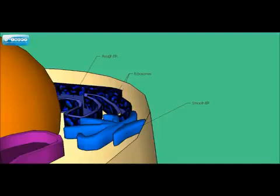Cells contain what is called a smooth ER and a rough ER. The difference between the two is that the rough ER is studded with ribosomes while the smooth ER is not.